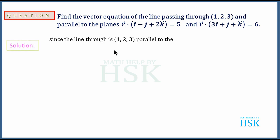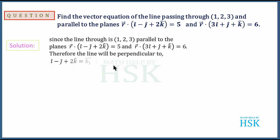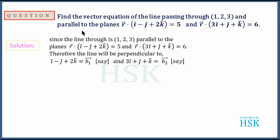Since the line passes through the point 1, 2, 3 and is parallel to both the planes, this means the line would be perpendicular to the normal vectors b1 and b2. b1 is the normal vector to the first plane and b2 is the normal vector to the second plane. Since the equation of the plane is given in normal form, the required line will be perpendicular to both b1 and b2.